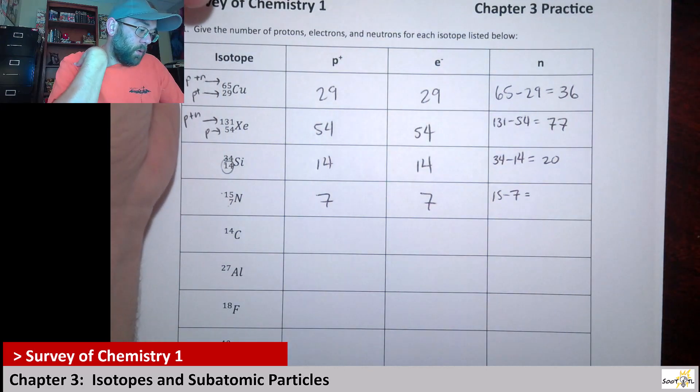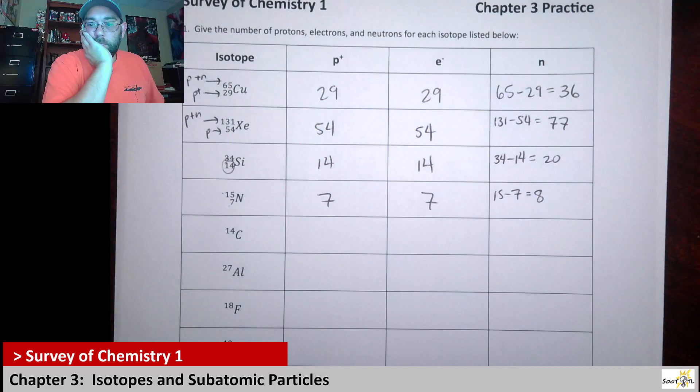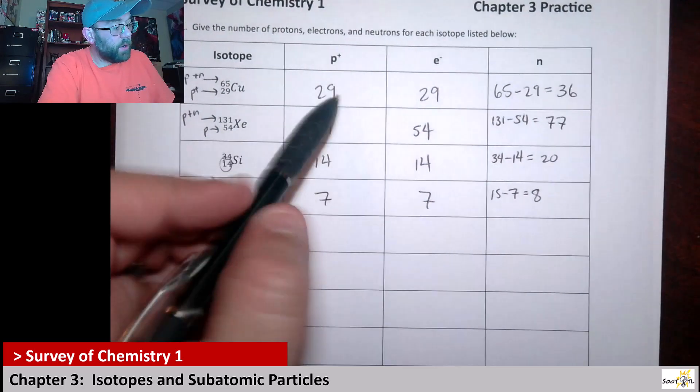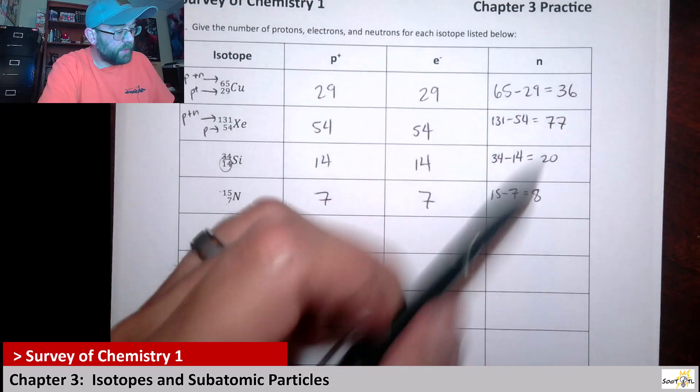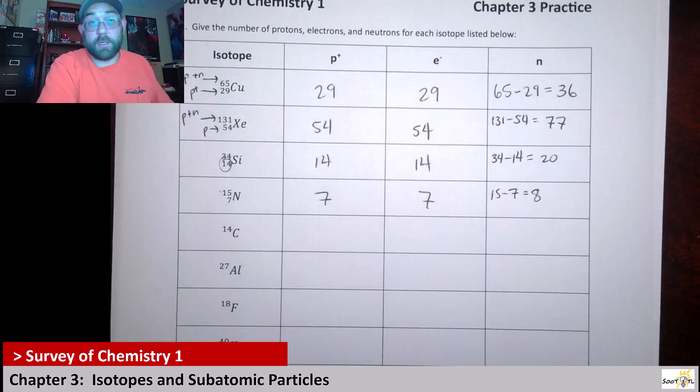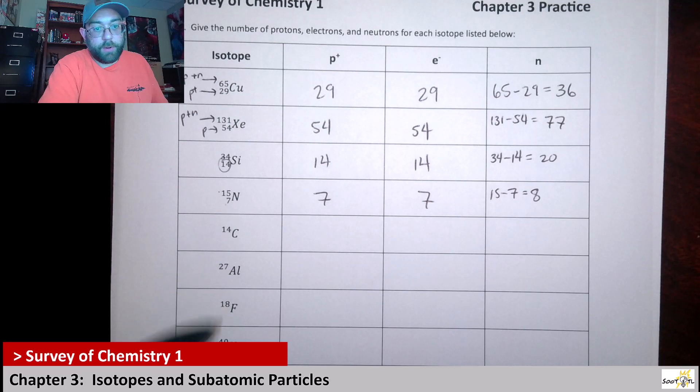One of the big takeaways here is to recognize that not all of these numbers are going to be the same. In a lot of these instances, what you're seeing is we have more neutrons than we have protons. That's possible. You could have less neutrons than you have protons too - that's something else to consider.